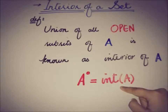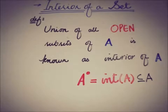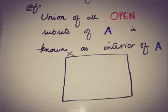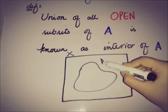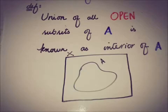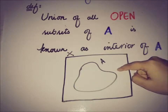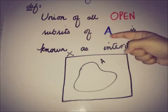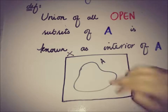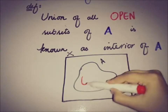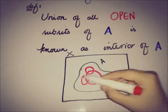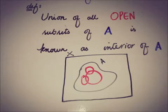The target is to prove that interior of A is contained in A, i.e., int(A) ⊆ A ⊆ X. If we pick a random subset A from the space X, then by definition we are looking for open subsets of A. The term 'open subsets of A' means that all the open sets we are looking for are strictly inside A. Let's assume there are three open sets of A: one, two, and three.